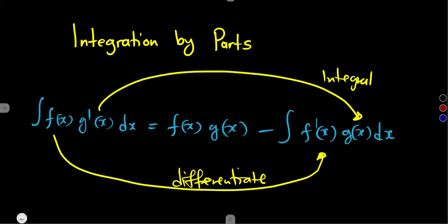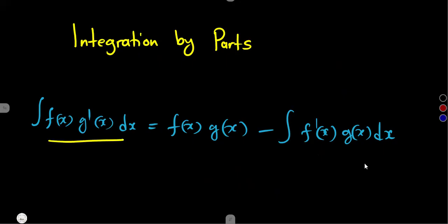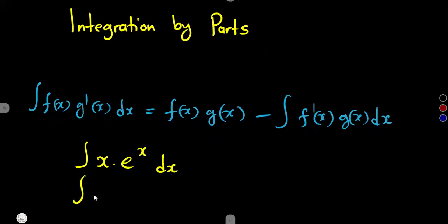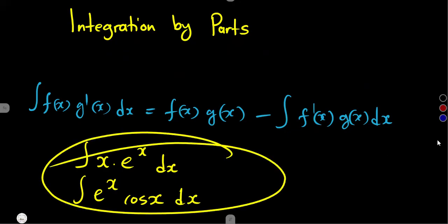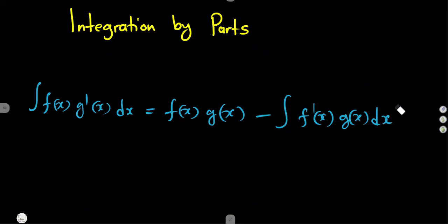But the question is: which part am I going to use as my f(x)? Because I am given two functions as a product of two terms. Of these two terms, which one am I going to choose to be my f(x)? For example, I am given x·e^x dx, or maybe e^x·cos(x) dx. Which part can I use as my f(x)? This is the major focus of this class.